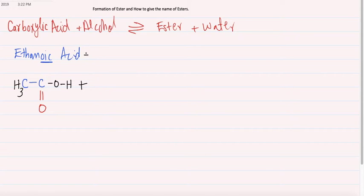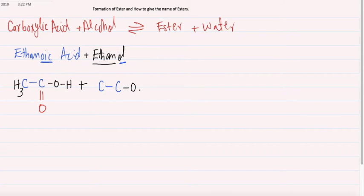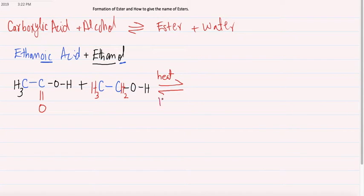The second compound is alcohol, so we use ethanol. Ethane means two carbon atoms, and OL means the OH group is directly attached with carbon. The structure is CH3 CH2 OH. We will provide heat and an acid catalyst in esterification, which is the process in which we synthesize the ester.